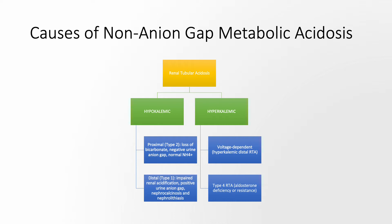Renal tubular acidosis can be either hypokalemic or hyperkalemic. When it's hypokalemic, it's either proximal or type 2, or distal type 1. These type 1 and 2 were named based on the date of discovery. In proximal or type 2 RTA, you have loss of bicarbonate due to failure of the proximal tubule to reabsorb all bicarbonate. There are no issues with distal acidification, and there is normal ammonium secretion, so the urine anion gap is negative. In all other types of renal tubular acidosis, the urine anion gap is positive.